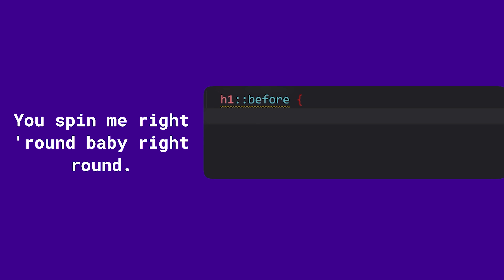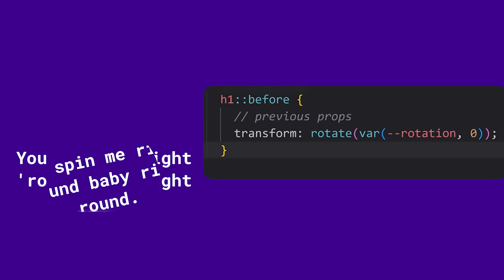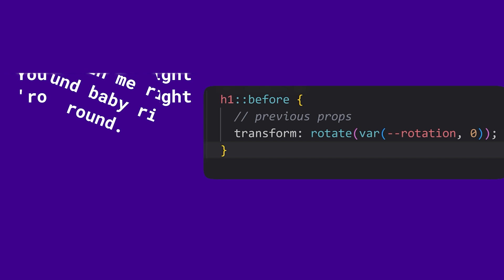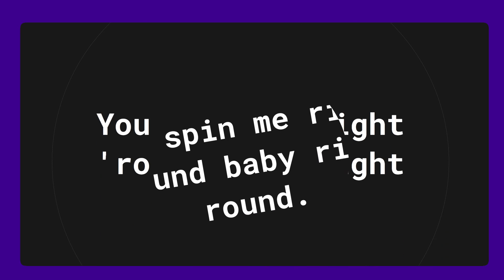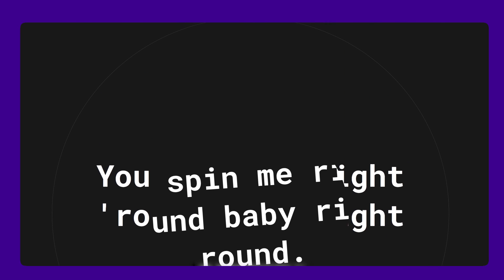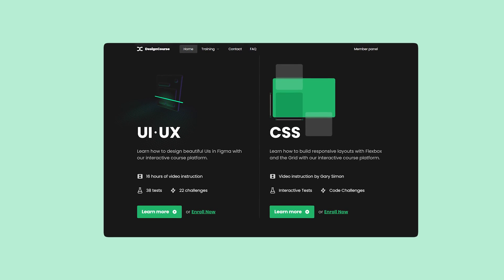Reverting back to CSS, we declare a transform property with rotate and pass in the rotation custom property — and would you look at that! If you want it to be smooth, just add a transition property, and that's it. We've got ourselves a very snazzy spinning text effect.